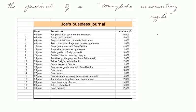Here is the journal of Joe's business over one complete accounting cycle. Since it's the first accounting cycle, the first transaction is Joe putting initial cash of 10,000 euros into his business. Then we take part of this cash to the bank account — 8,000 euros. Then Joe's business buys a delivery van on credit from Jules Garage for 3,000 euros. Then we pay rent of 1,000 euros, and buy goods on credit from a supplier called Deirdre. Let's look at each transaction one by one.